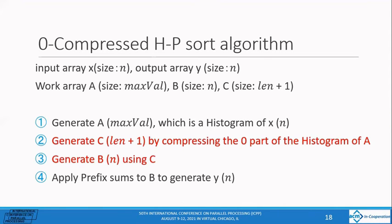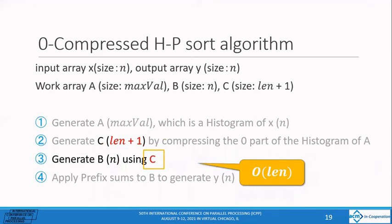The difference from HP-sort in the algorithm is the process of generating c of the size len plus 1 that compressed the zero paths of the histogram instead of the prefix sums after generating the histogram, and the process of generating array b biased using c. The biggest difference from HP-sort is that the amount of calculation in step 3 is O of len. The HP-sort was O of max val, so if len is smaller than max val, speed up can be expected.